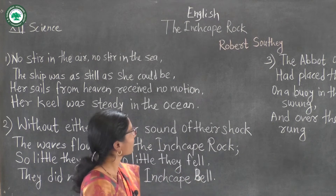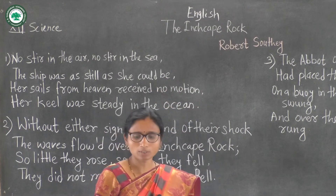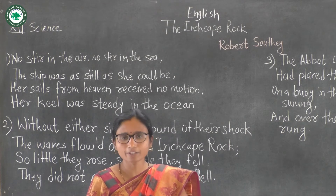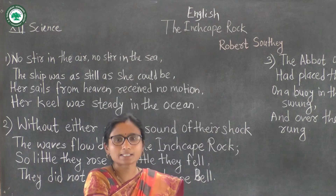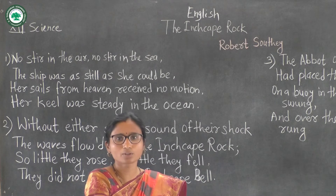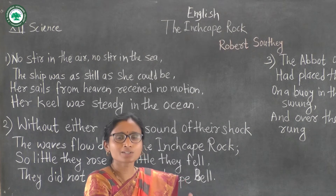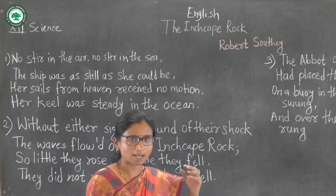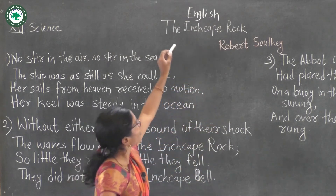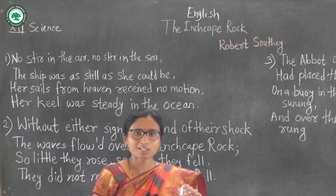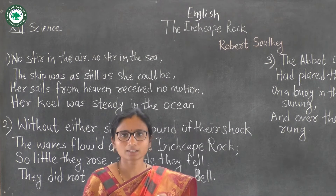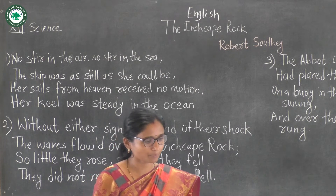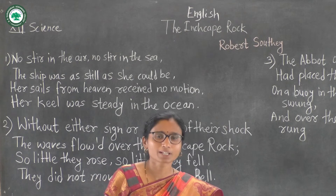What is the Inch Cape Rock? The Inch Cape Rock is actually a reef — a sandstone reef about 11 miles, that is 18 km, off the east coast of Angus, Scotland. This story happened on this rock. This poem consists of 17 quatrains written in rhyming couplets.